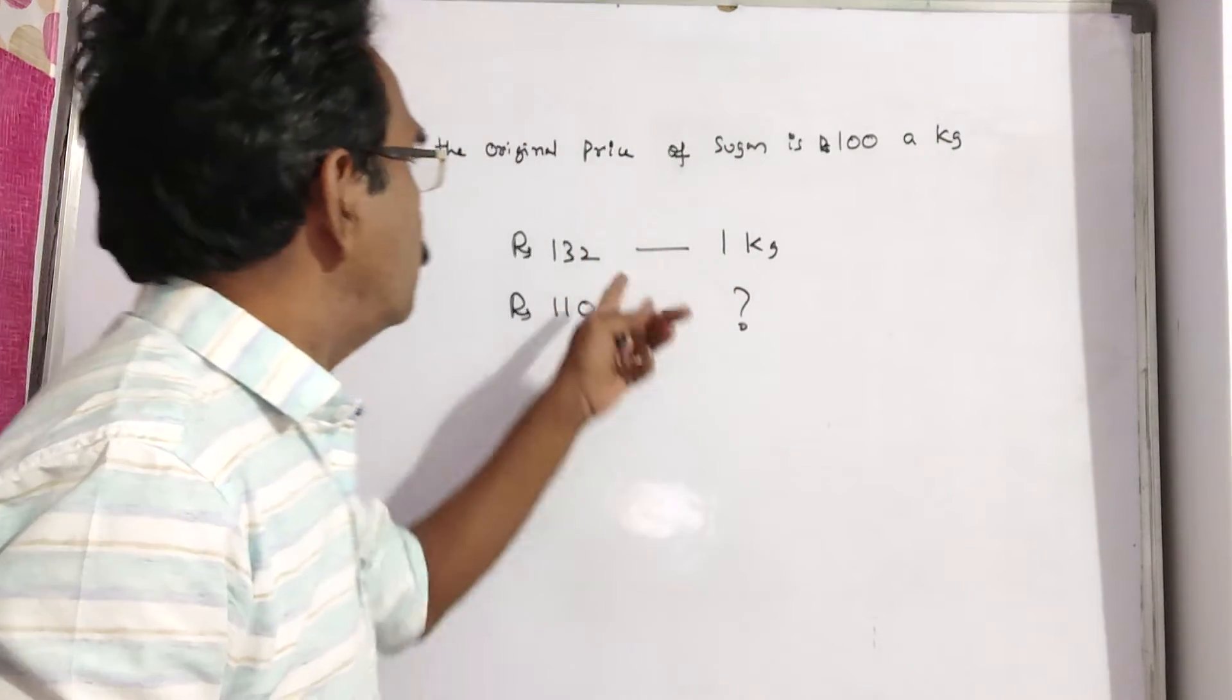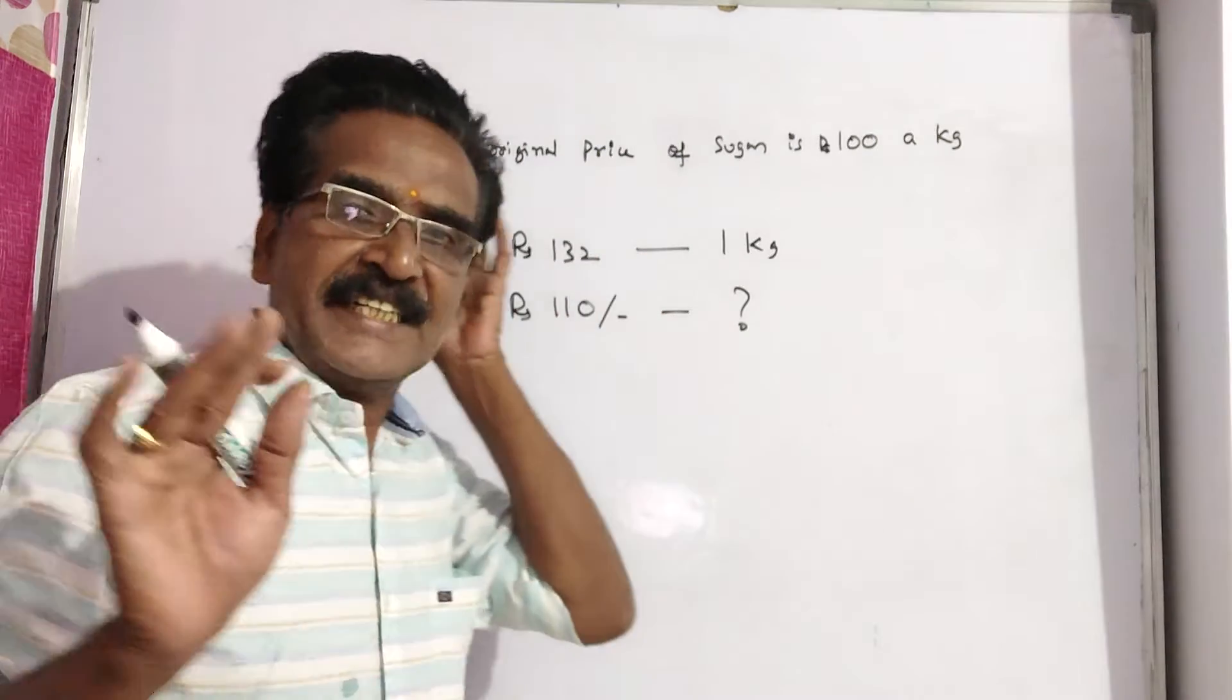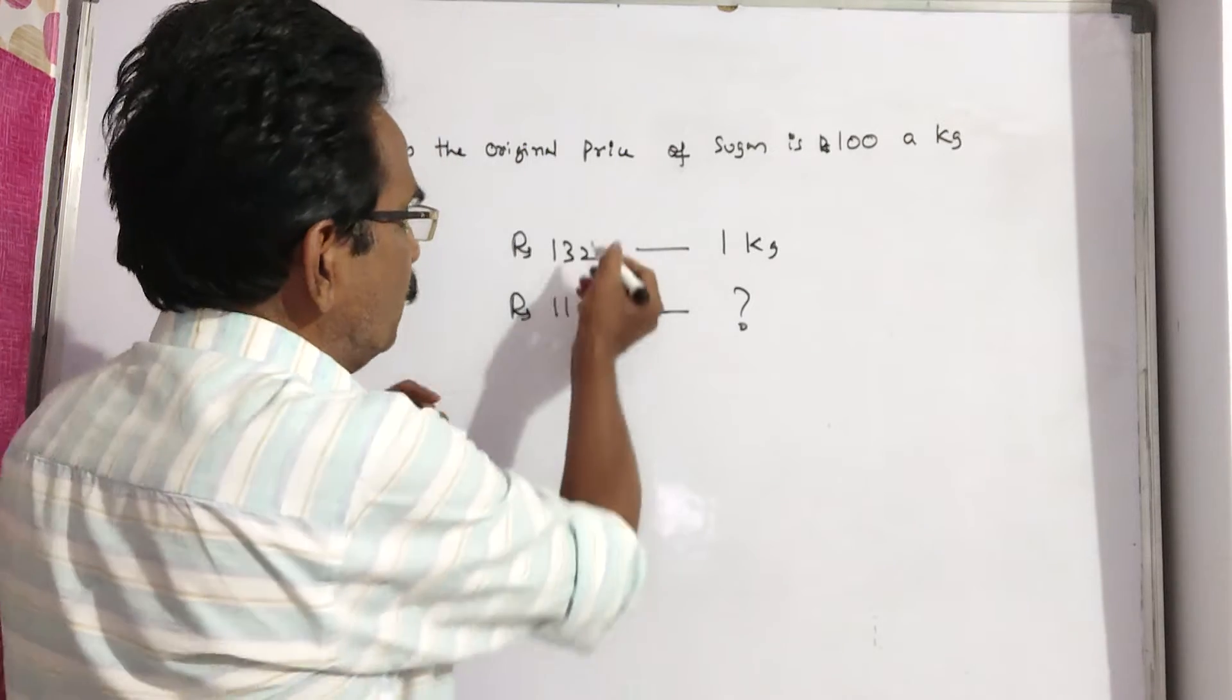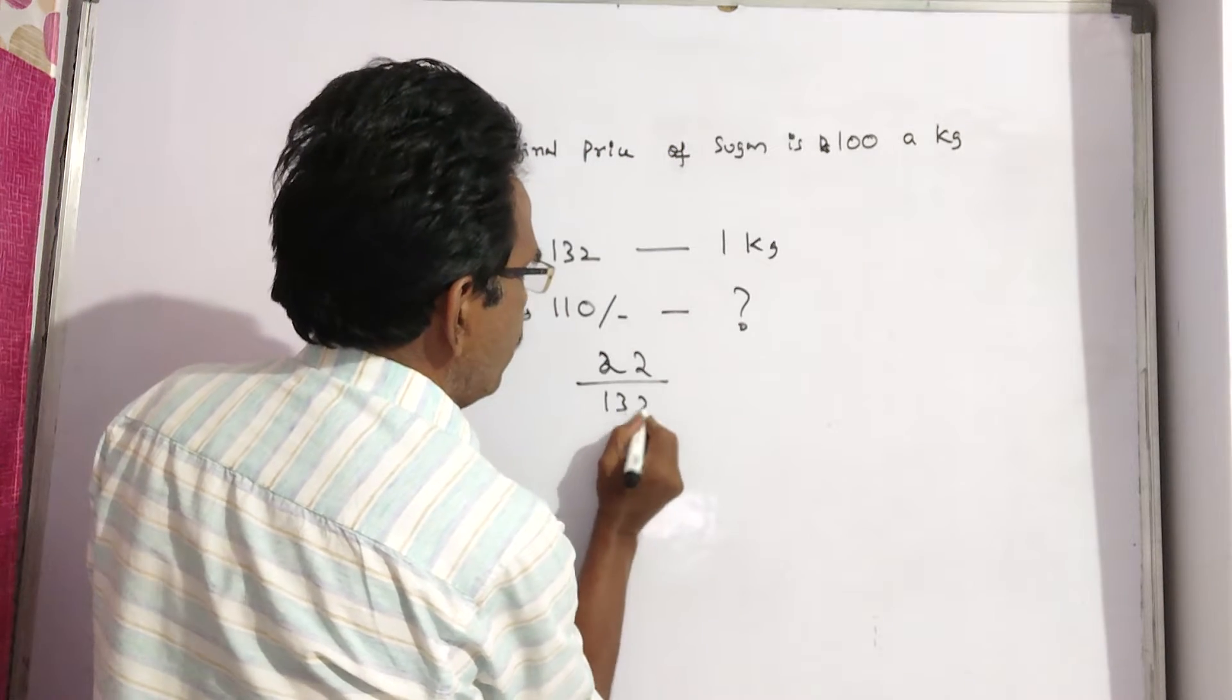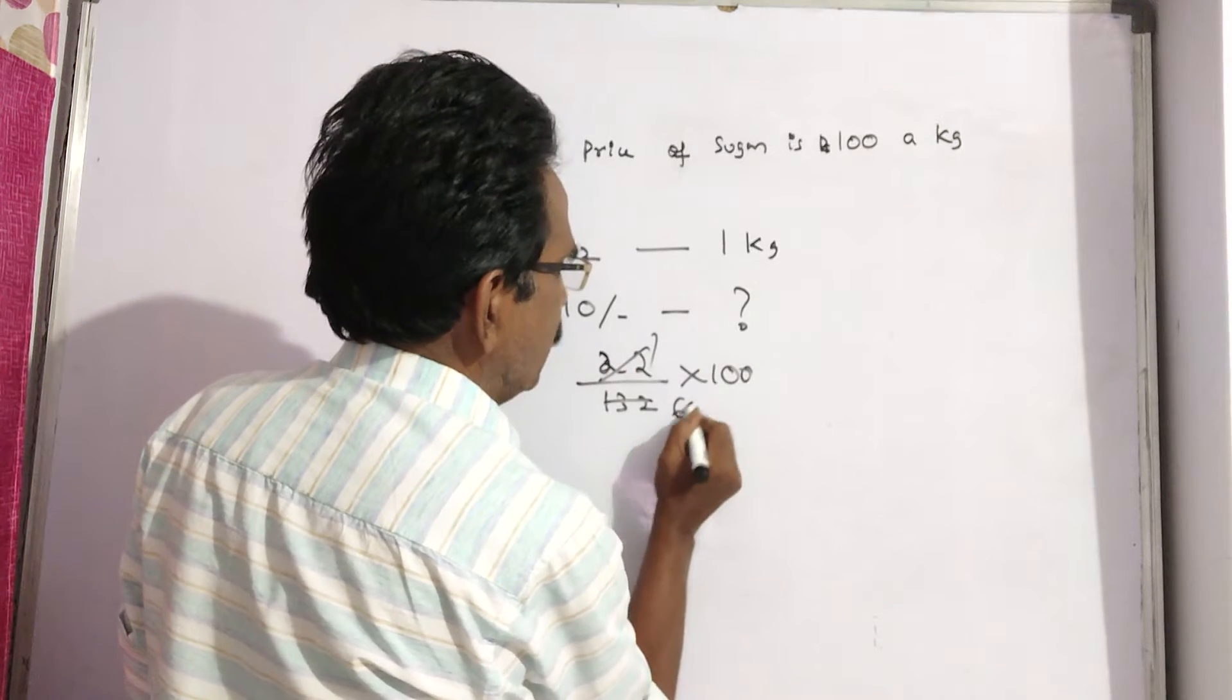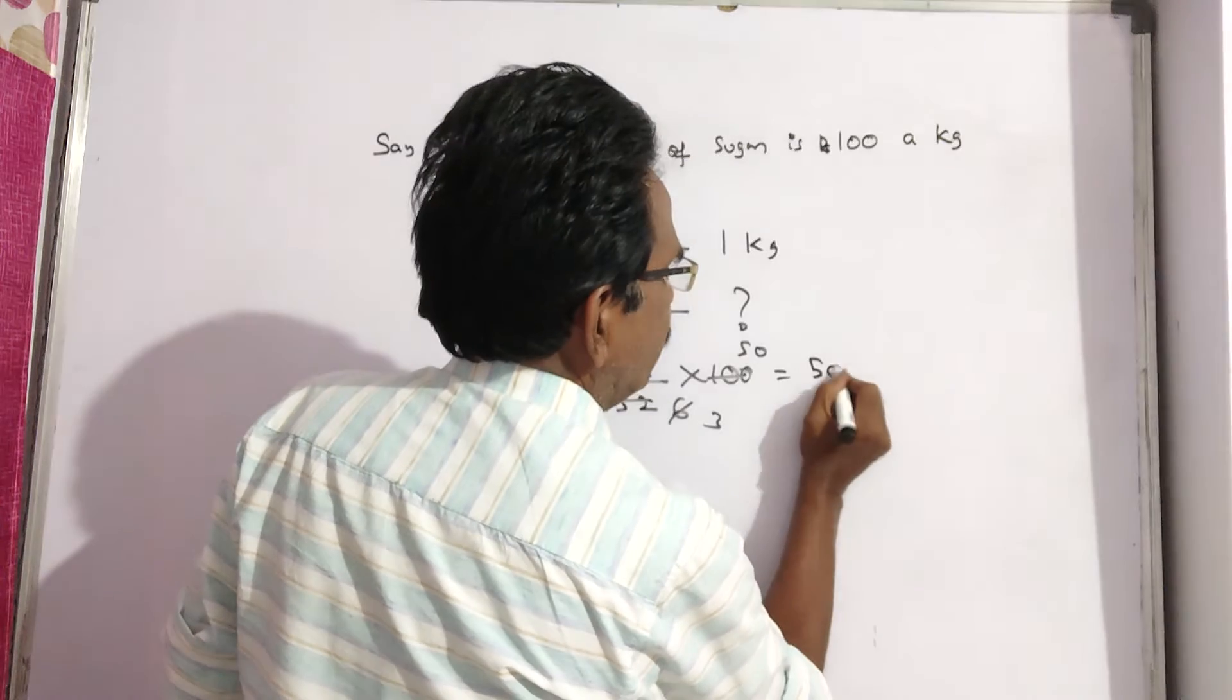So they have to reduce the consumption to the extent of 22 rupees. What is the decrease percent in the consumption? Decrease percent equals decrease divided by original value times 100. That's 132 minus 110, divided by 132, times 100, which equals 50 by 3 percent.